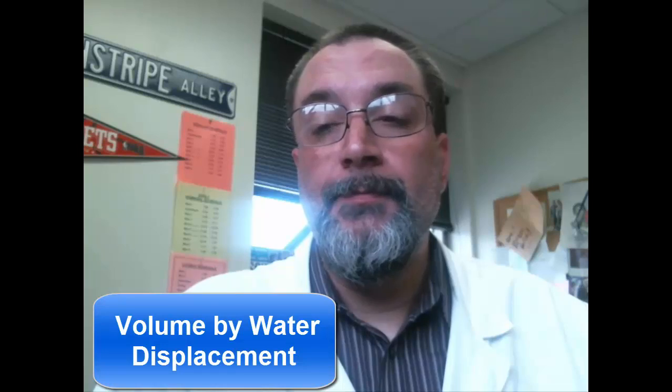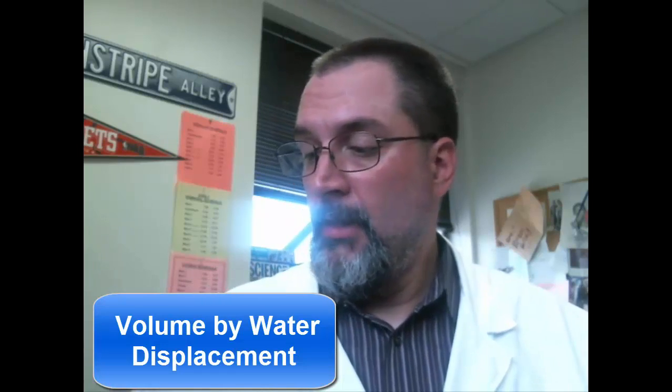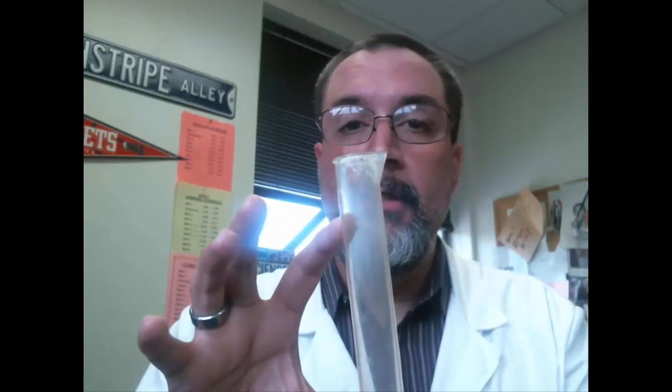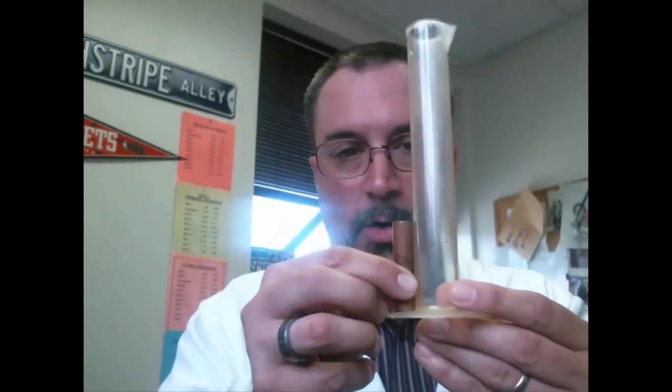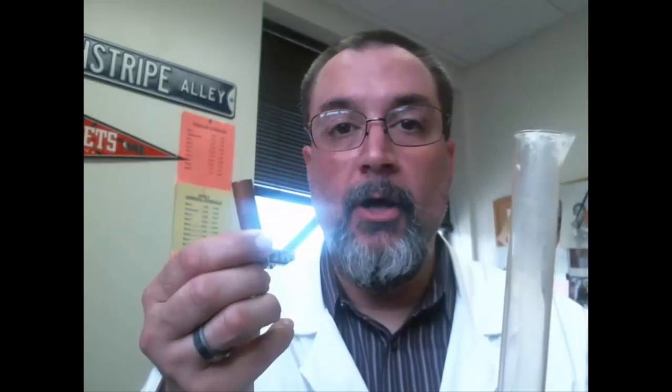It's called volume by water displacement and it's very simple. Take a graduated cylinder. You put some water in it. Now you don't want to fill it to the top, you just want to put a little bit of water in there. It's important that the amount of water that you put in is enough so that you can completely submerge the object that you want the volume of.